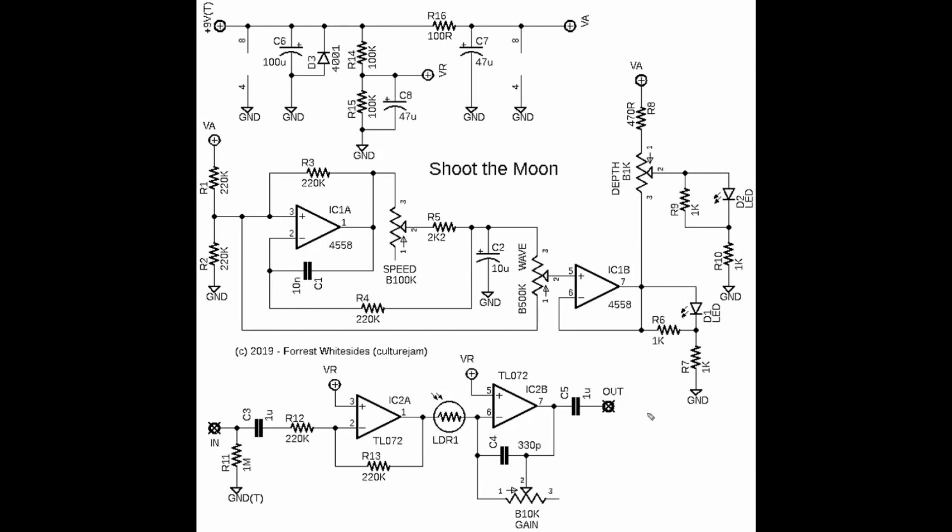First, the circuit we're going to be looking at today is called the Shoot the Moon tremolo, which is a really great circuit that's been around in the DIY world for a little while. Forrest Whitesides, who goes by the handle Culture Jam on the Free Stomp Boxes forum, is the guy who is responsible for this creation.